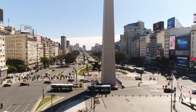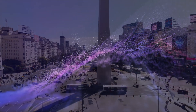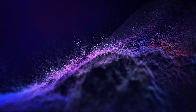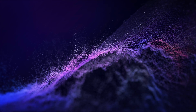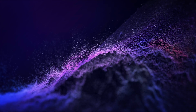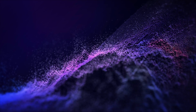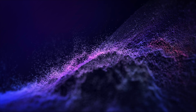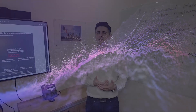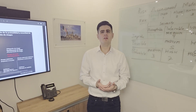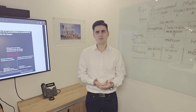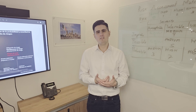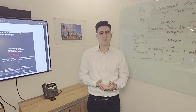A model is a simplified version of reality. It takes information as input, applies assumptions and gives an output, like a predicted loss or risk score. But the quality of a model depends on its structure, data, developer and purpose.